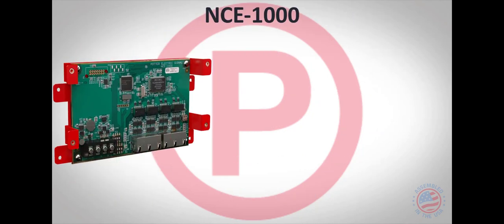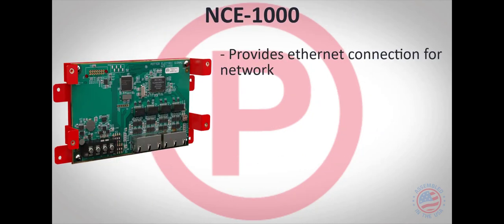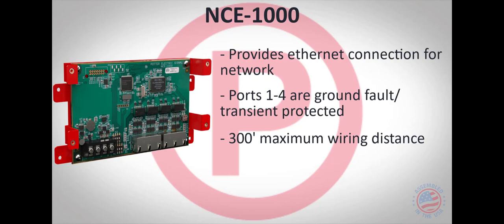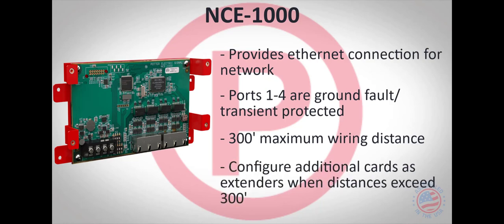The NCE-1000 is used to network the fire alarm panels using Cat5 cabling with RJ45 connectors. Ethernet ports 1 through 4 can be enabled for ground fault and transient protection based on the DIP switch settings. The NCE-1000 has a limitation of 300 feet of cabling distance between cards. Additional cards can be configured as extenders to provide an additional 300 feet of cabling distance.